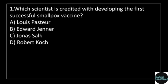1st question: which scientist is credited with developing the first successful smallpox vaccine? Answer options: option A, Louis Pasteur; option B, Edward Jenner; option C, Jonas Salk; option D, Robert Koch.